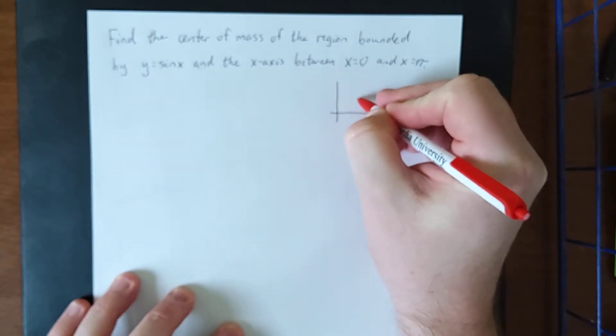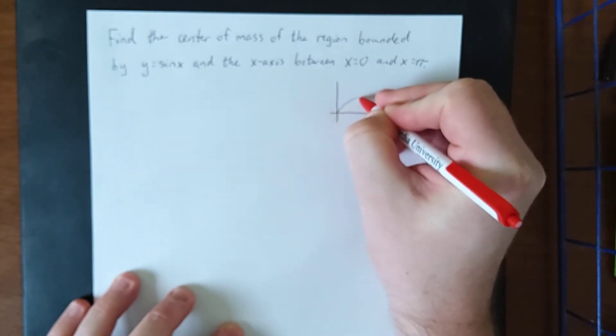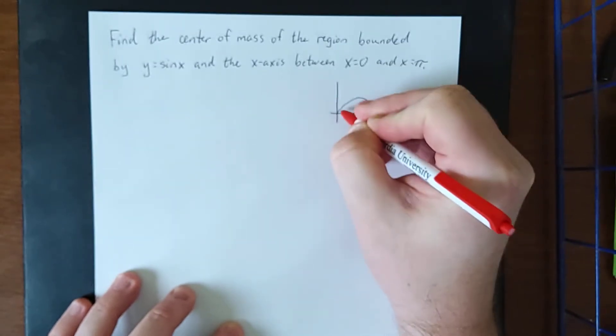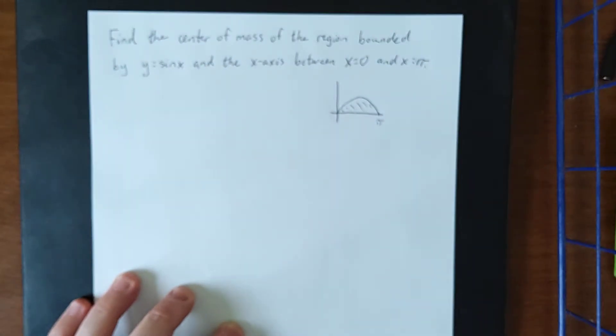The first thing we'll do is take a look at the graph of the sine function in between x equals 0 and x equals pi within the first quadrant. So this would be the region in question.